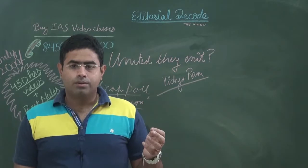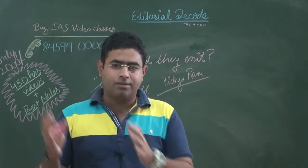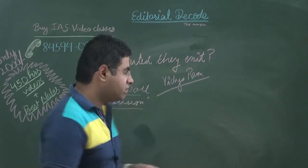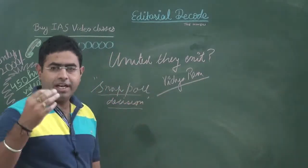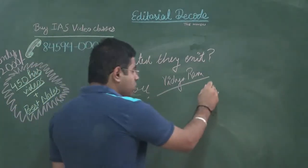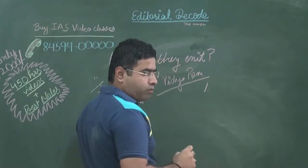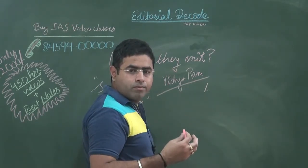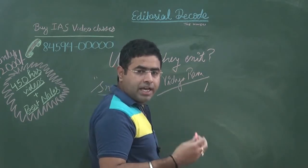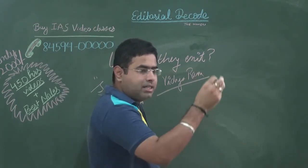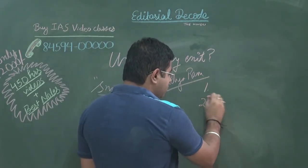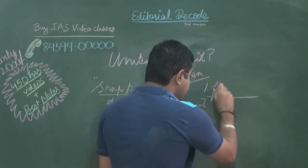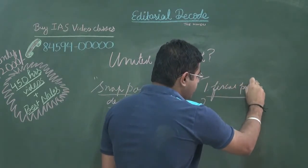Britain wanted an exit from the European Union and there were certain substantive reasons for it. The first reason was that Britain was feeling the fiscal pinch — the welfare programs were costing Britain significantly due to the immigrants that were coming in and settling there.